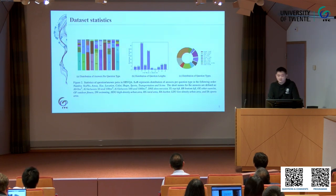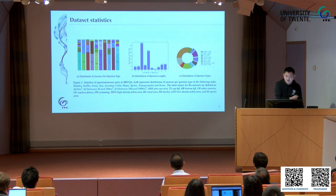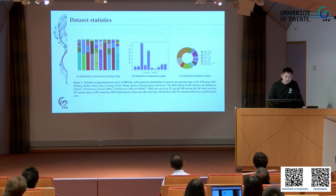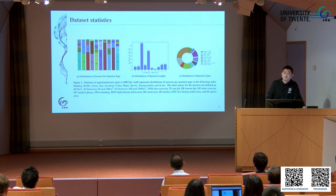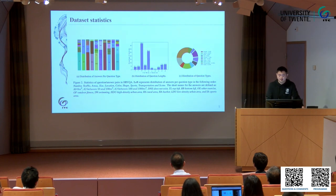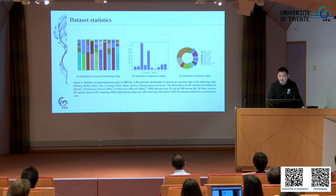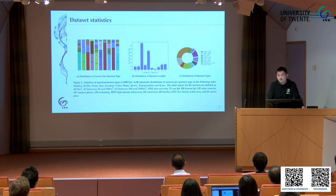These three figures show the dataset statistics. The left figure represents the distribution of answers for the 10 question types — for each type, certain answers are dominant, which are very commonly seen in aerial images. The second figure shows the length of questions in this dataset, and the right figure shows the percentage of different question types, covering both simple and difficult questions.